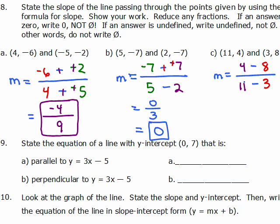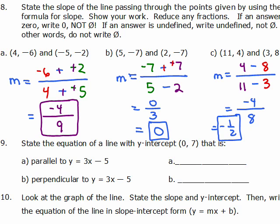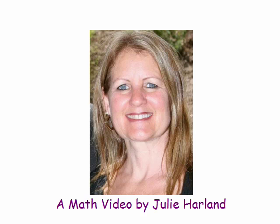For the third one, 4 minus 8 gives negative 4 over 8, and that reduces to negative 1 half.